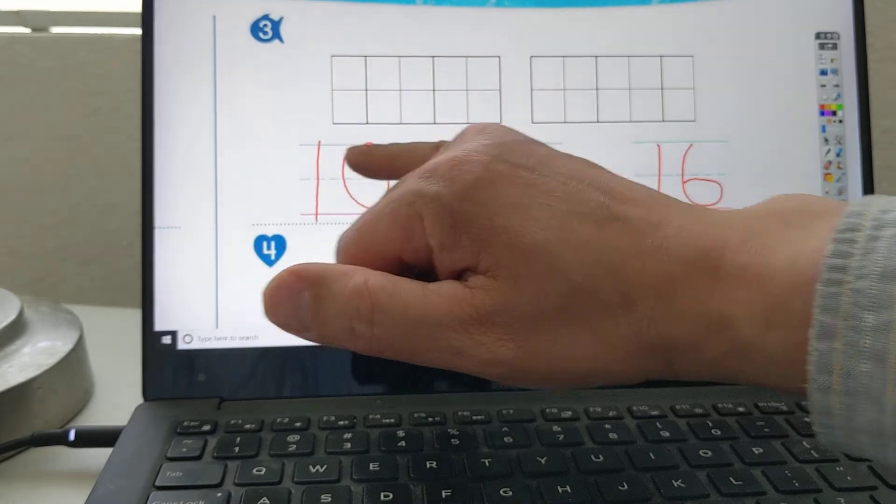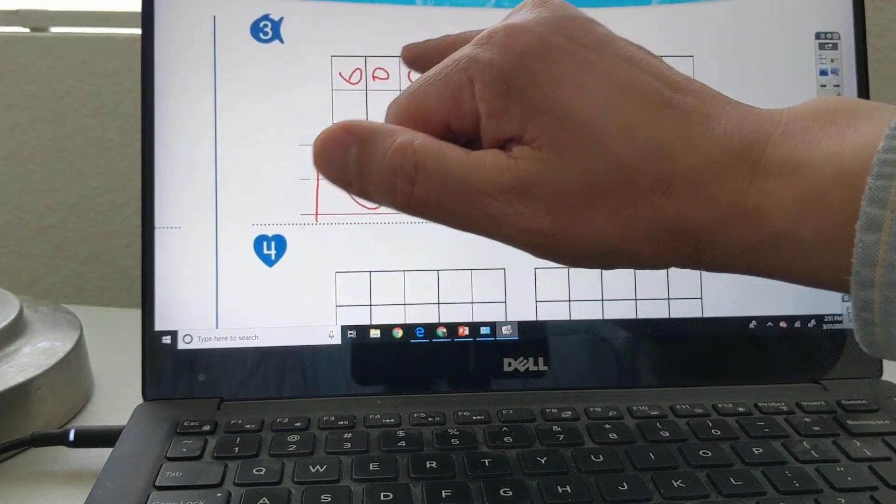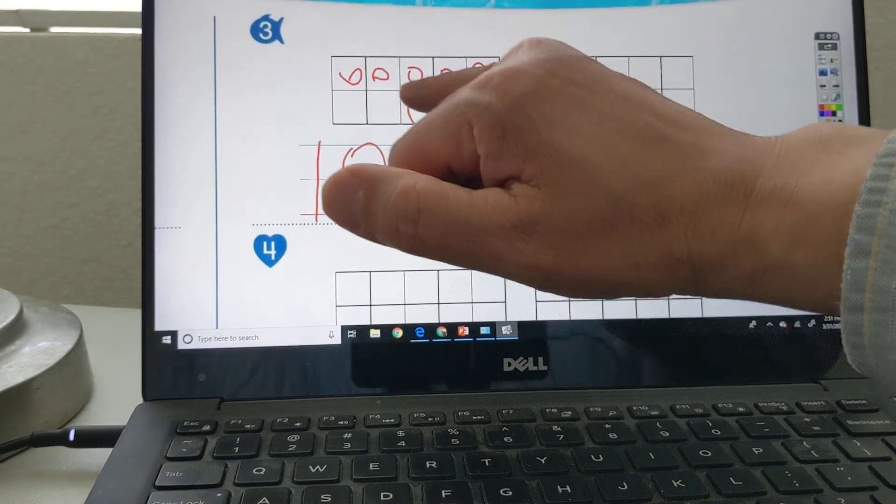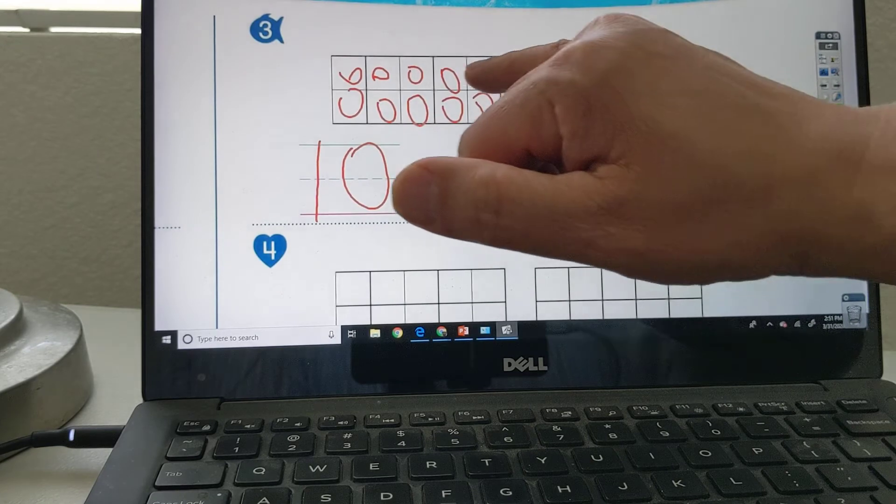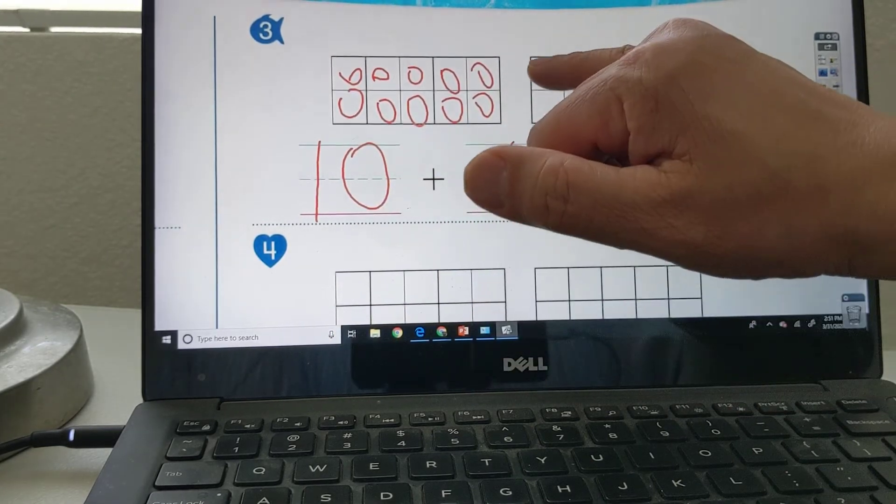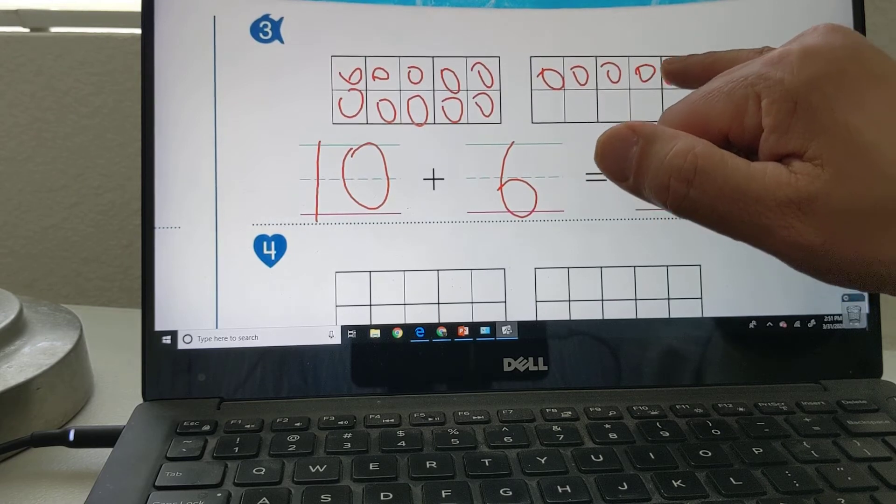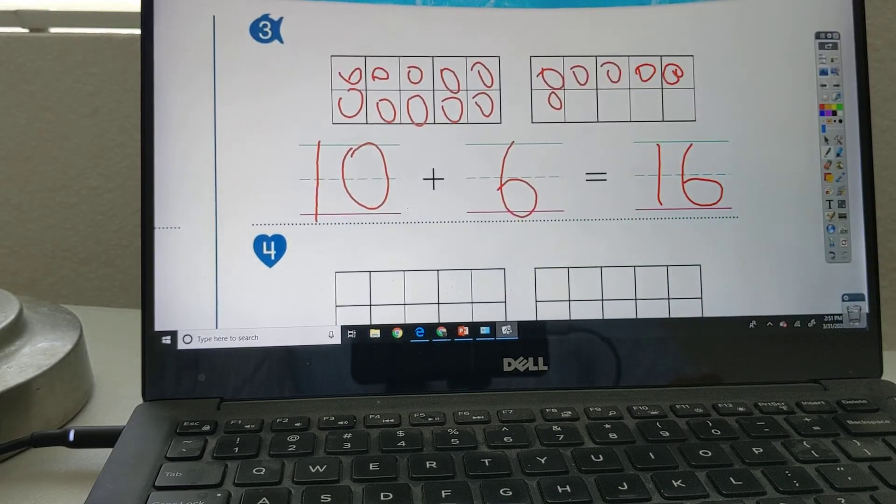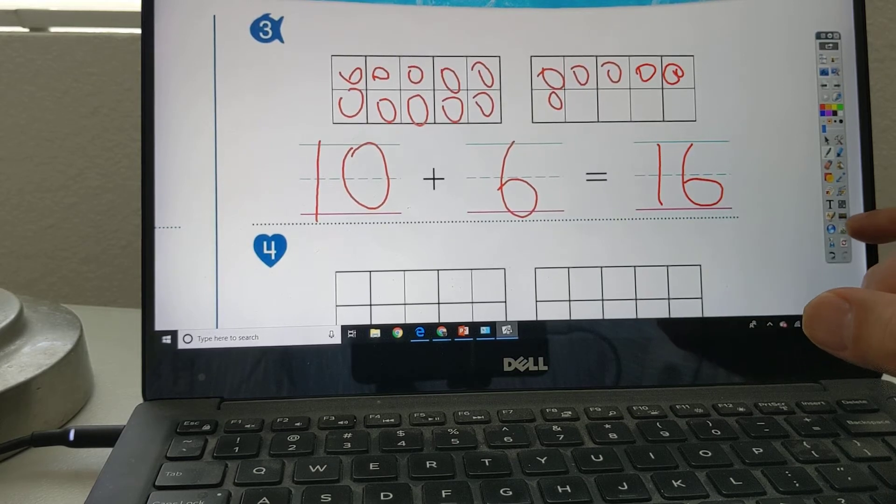10 plus 6. 1, 2, 3, 4, 5, 6, 7, 8, 9, 10. Guess how many to put here. It's 10 plus, you got it. 1, 2, 3, 4, 5, 6. Just transfer that to your writing journal.